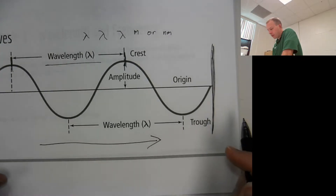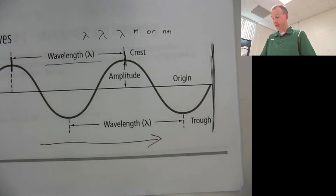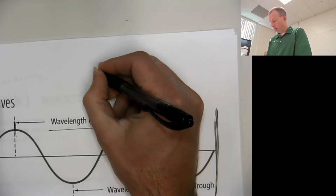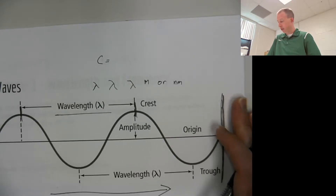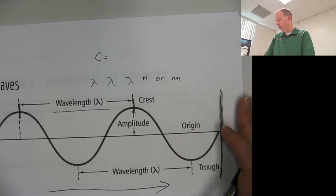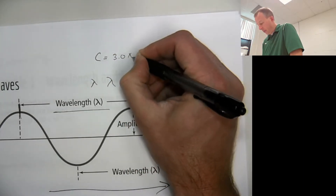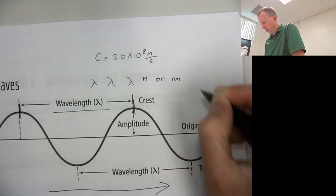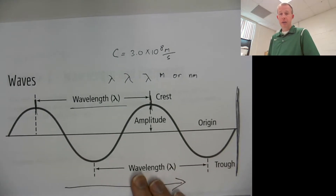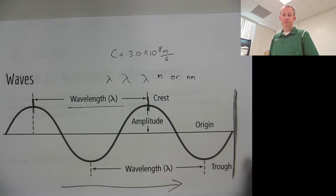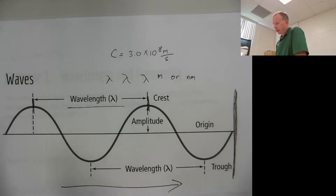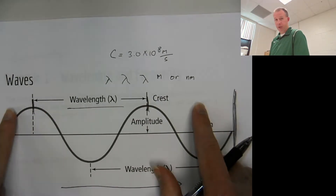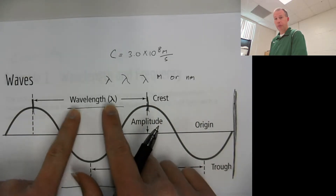All the waves we're looking at travel at the same speed, which is the speed of light. The speed of light is represented by the value C. What we're talking about — all these waves — are waves of electromagnetic radiation, which is basically just light. The speed of light is 3.0 times 10 to the 8 meters per second. The speed of the wave does not alter the frequency. The only way to change frequency is by making the wavelength bigger or shorter.